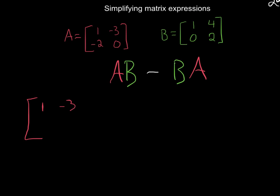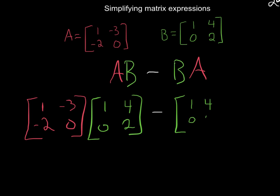So we'd have the matrix A, 1, negative 3, negative 2, 0. The matrix B, 1, 4, 0, 2, minus, and we're going to flip it, 1, 4, 0, 2, and 1, negative 3, negative 2, 0.